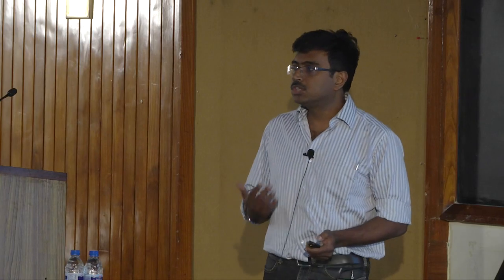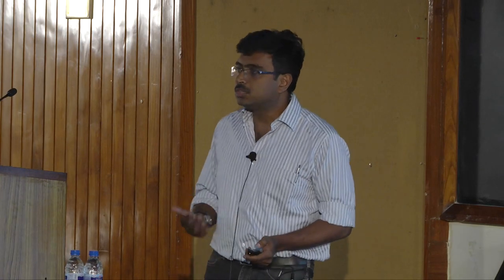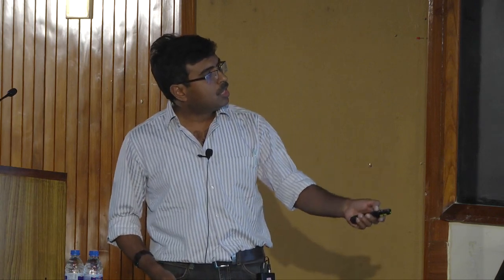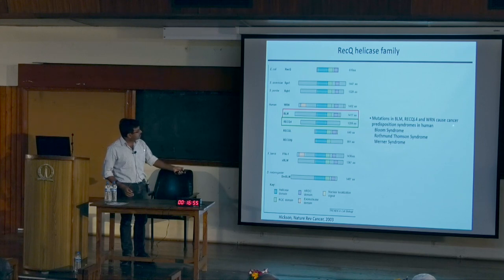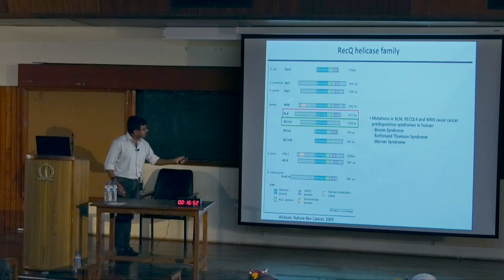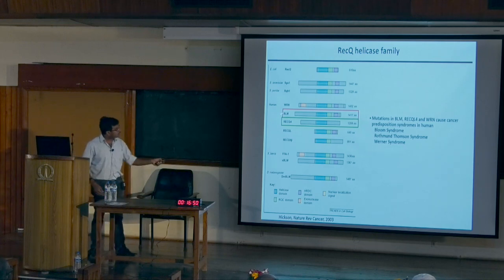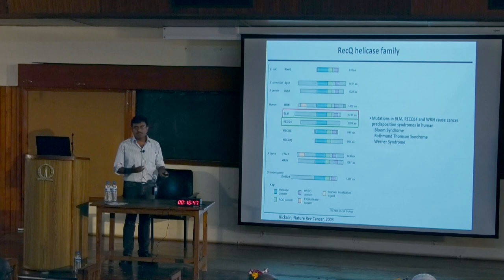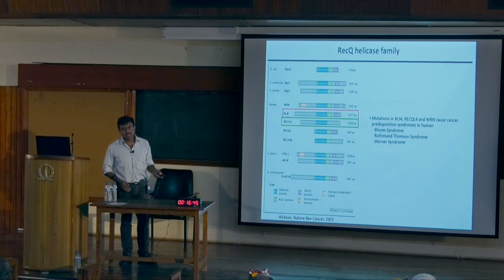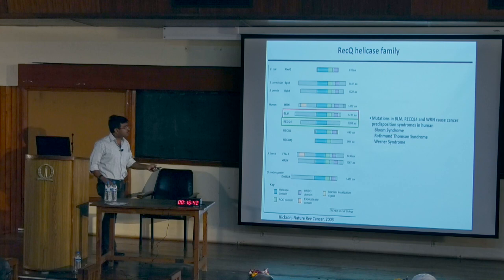Even heterozygous carriers have much more predisposition towards cancer. When BLM is mutated it leads to Bloom syndrome; RECQL4 mutations cause Rothmund-Thomson syndrome; and WRN causes Werner syndrome. In our lab we work on two of these: BLM and RECQL4. The first part of the talk will focus on BLM and the last part on RECQL4.